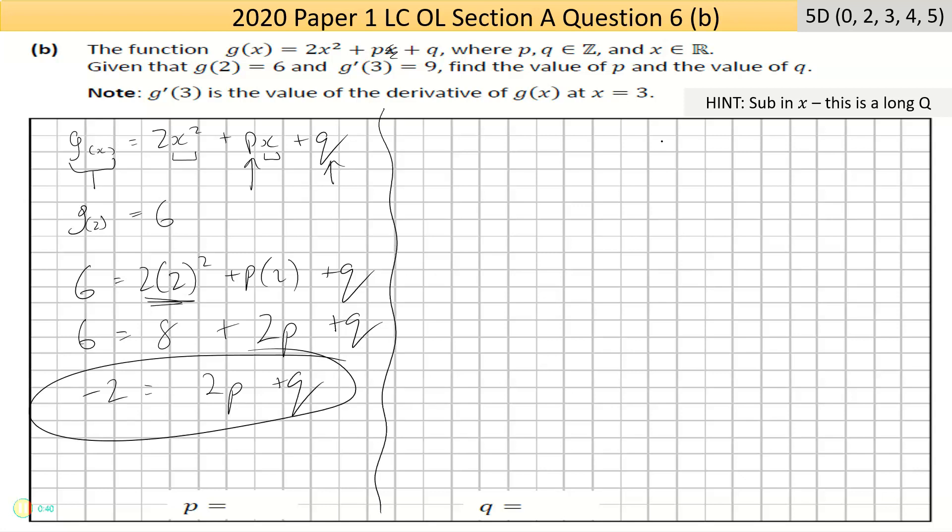I'm going to bring this 8 this way, and that becomes 6 - 8 = -2, equals 2p + q. So I have an equation with two unknowns.